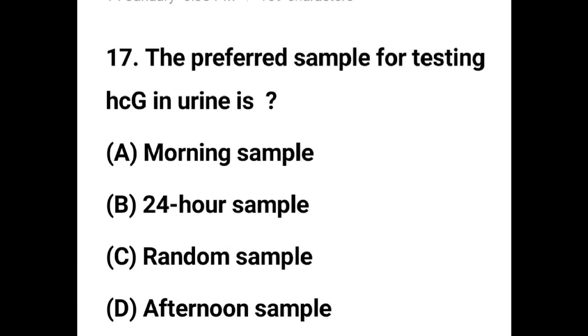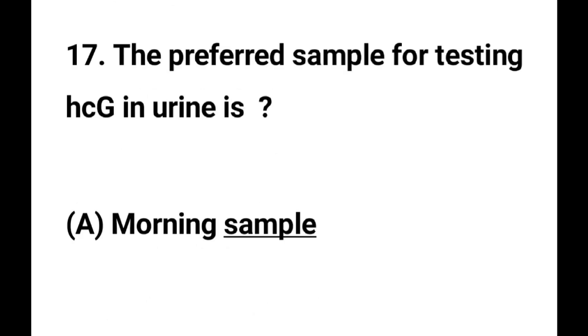Question number 17. The preferred sample for testing HCG in urine is: Option A - Morning sample, Option B - 24-hour sample, Option C - Random sample, Option D - Afternoon sample. The correct answer is Option A, Morning sample. Morning sample is preferred for testing HCG in urine.